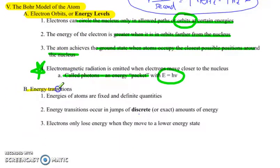Looking at energy transitions, energies of atoms are fixed and definite in their quantity. Energy transitions occur in jumps of discrete or exact amounts of energy. And electrons only lose energy when they move to a lower energy state.